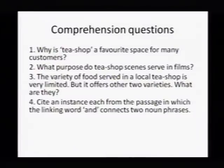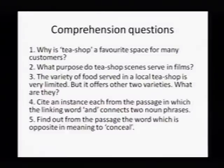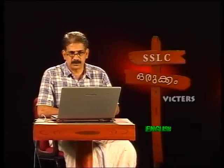Cite an instance each from the passage in which the linking word 'and' connects two noun phrases. Here it is considered as a language element question. That too, it is coming from that comprehension question. And find out from the passage the word which is opposite in meaning to 'conceal' — that is a vocabulary type of question. So different types of questions which may appear for the examination are like this.